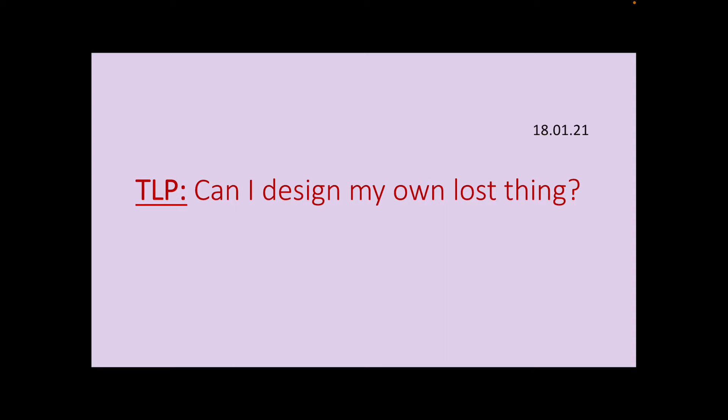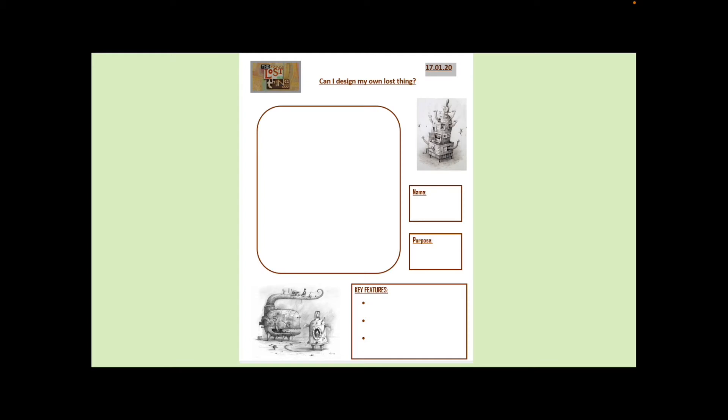So you have met some of the lost things in the Lost Thing book that I read to you last Wednesday and this is your chance to now design your own. Now, if you were in school, this is the sheet that you would get. Can I Design My Own Lost Thing? In the big box, that is where you would draw your lost thing. Then you've got a box for the name, the purpose and for the three key features of your lost thing.